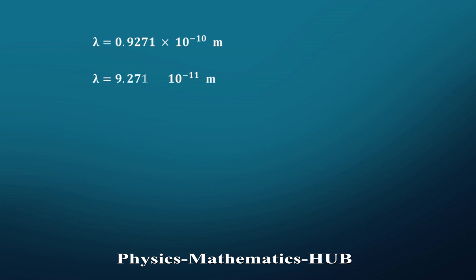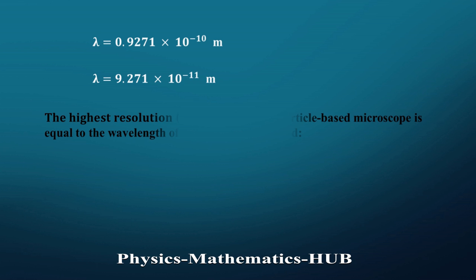In scientific notation, λ = 9.271 × 10⁻¹¹ meters. The wavelength we calculated gives us an estimate of the resolution of the microscope when using electrons of energy 175 electron volt.